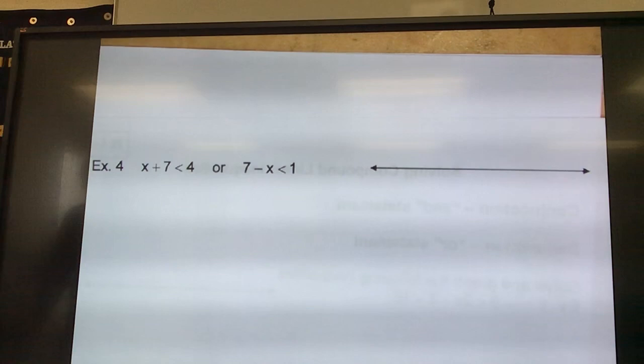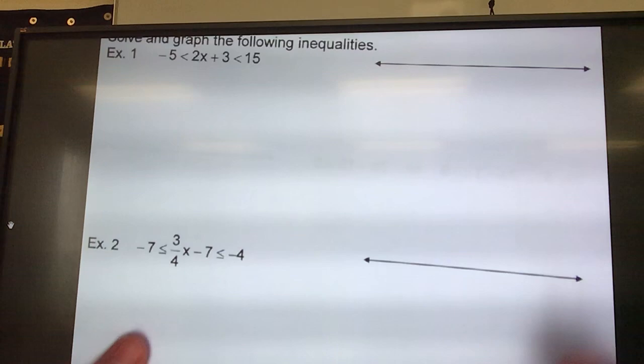So the graph will point out away from each other. They will never point in the same direction, and they will never overlap if it's an or. That's a good way to check your work.